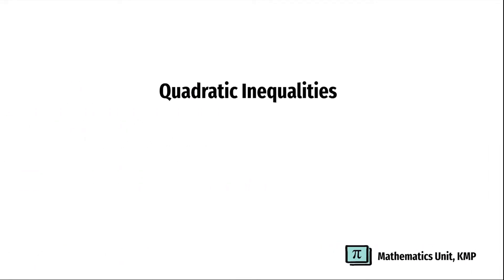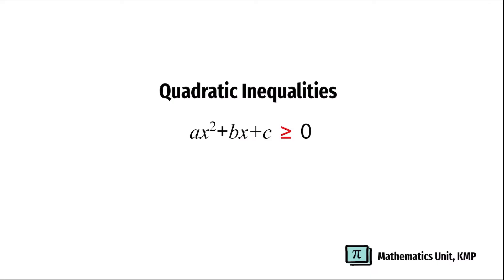A quadratic inequality is an inequality of the form ax² + bx + c < 0, where a, b, and c are real numbers with a not equal to 0. The inequality symbols less than or equals to, greater than, and greater than or equals to may also be used.